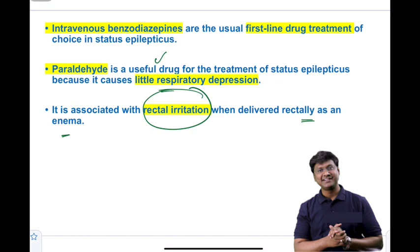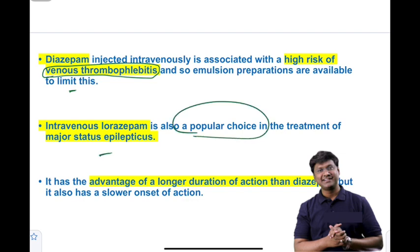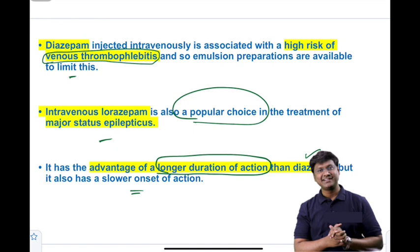For status epilepticus, the benzodiazepines commonly used are lorazepam and diazepam. Diazepam is injected intravenously and has a high risk of venous thrombophlebitis; emulsion preparations are available to limit this. Lorazepam is the popular choice in status epilepticus because it has a longer duration of action compared to diazepam, though it has a slower onset of action. The drug causing rectal irritation in this scenario is paraldehyde.